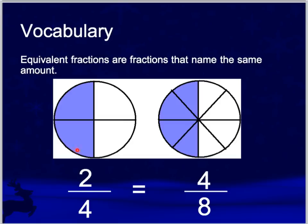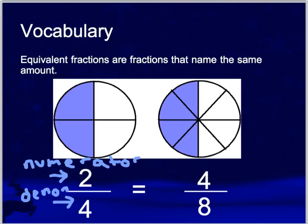We have this fraction here. There are four parts, two of them are shaded. Two is our numerator and four is the denominator. Two-fourths is equivalent to four-eighths. Both of those models and both of those fractions are naming that same amount.